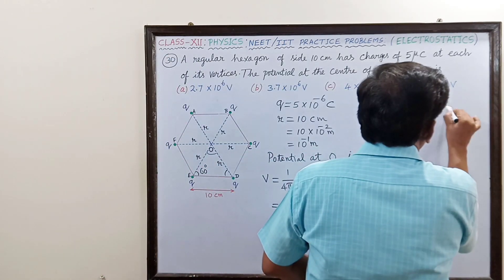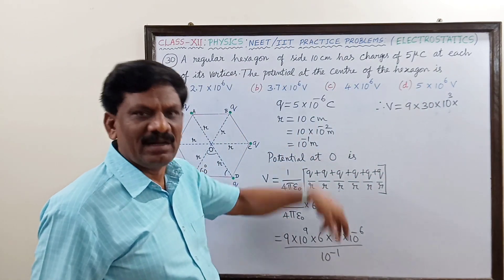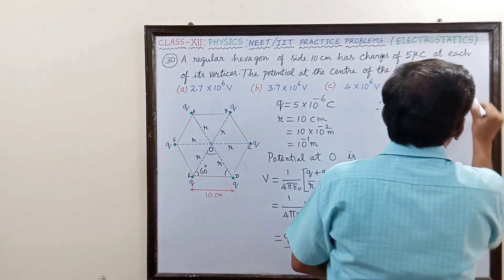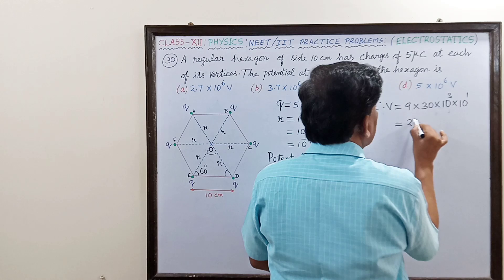This is 10 power of minus 6, into 10 power of minus 6 is 10 power of 3. Into this, 10 power minus 1 will come up as 10 power plus 1, so this is 10 power 1.